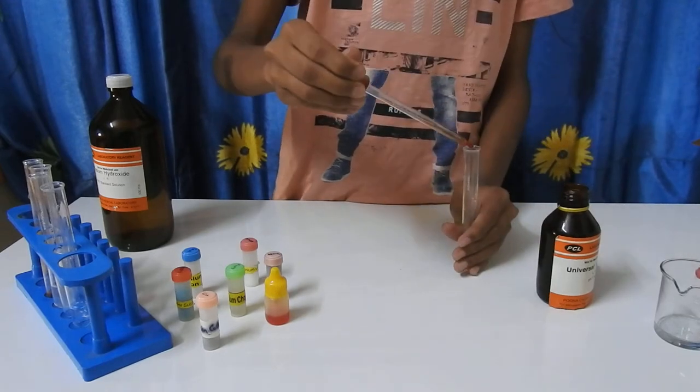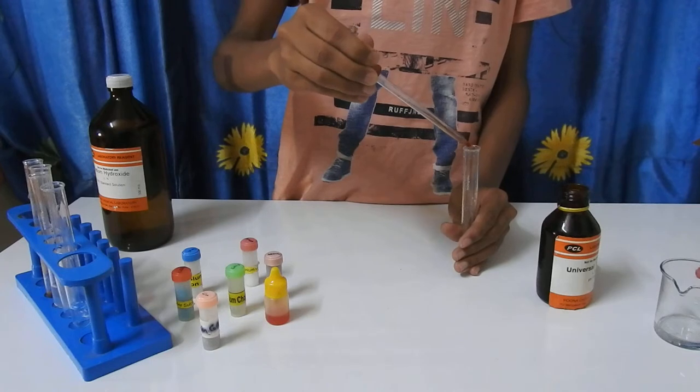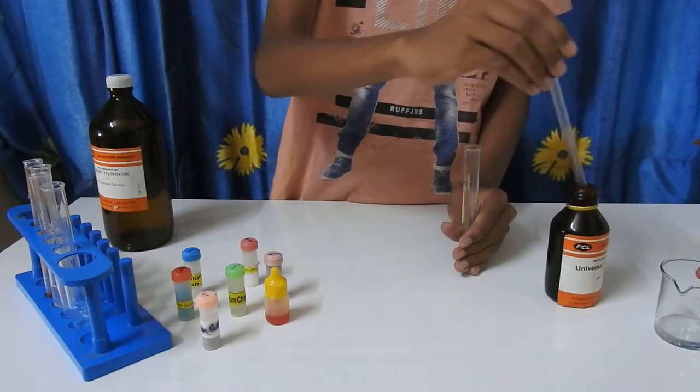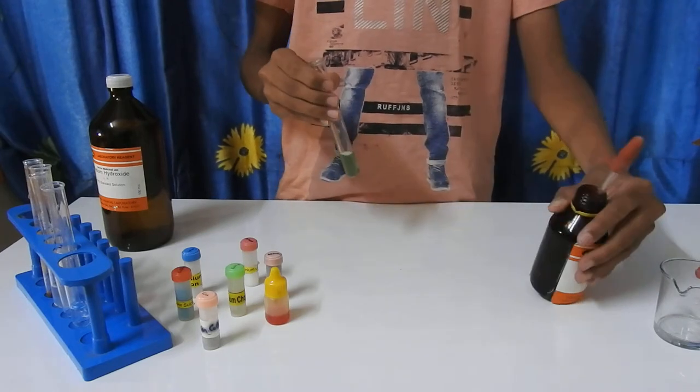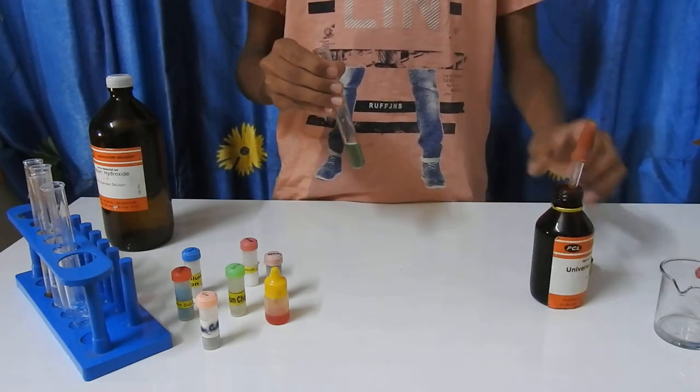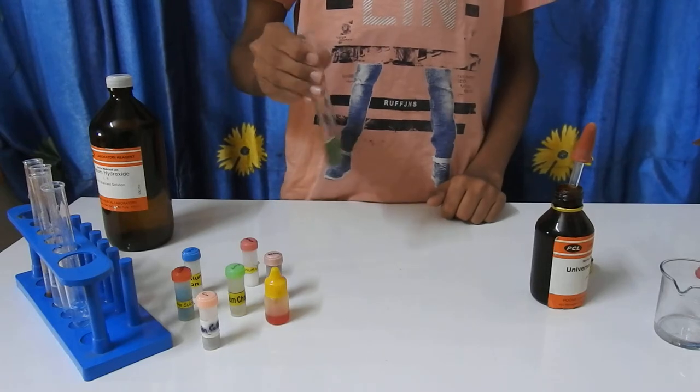As you can see, it is turning green, a darker shade of green. Dark green indicates pH 7.5, which is clearly basic.